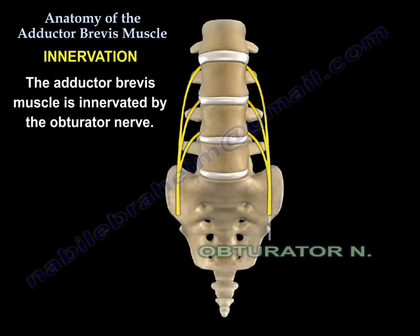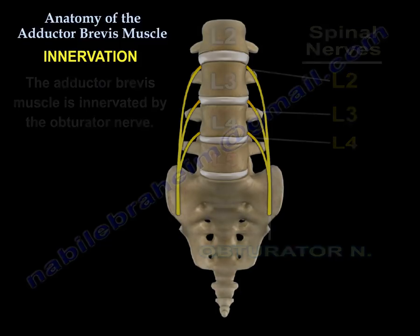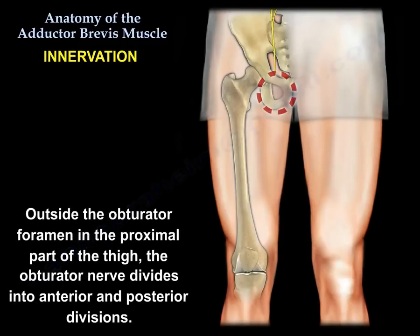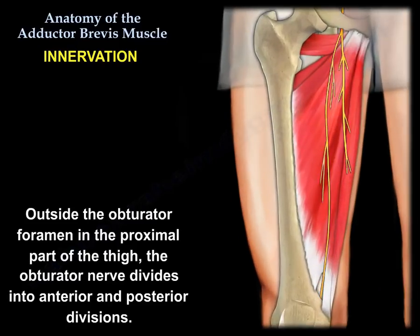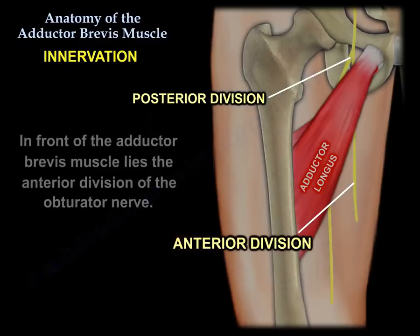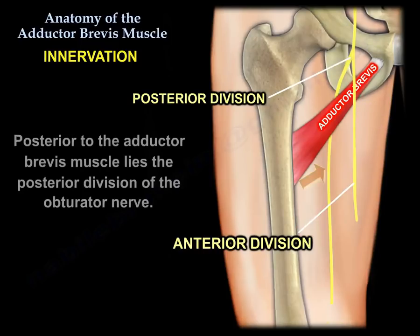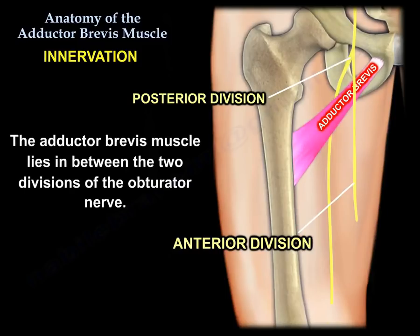Innervation. The adductor brevis muscle is innervated by the obturator nerve. Outside the obturator foramen in the proximal part of the thigh, the obturator nerve divides into anterior and posterior divisions. In front of the adductor brevis muscle lies the anterior division, and posterior to the adductor brevis lies the posterior division. So the adductor brevis muscle lies in between the two divisions of the obturator nerve.